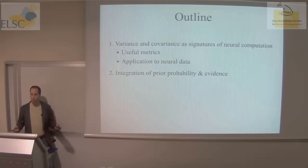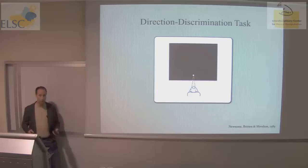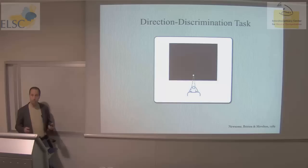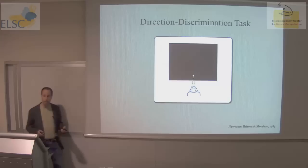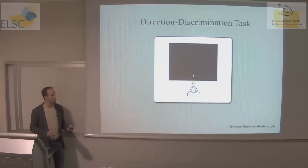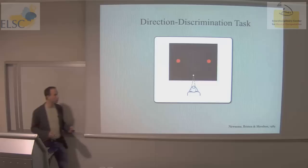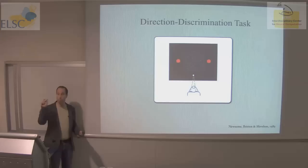Most of you were at the lecture on Tuesday, so very quickly I'll remind you of the basics. We study decision-making in rhesus monkeys trained to make decisions about things they see on a video display. These experiments are based on judgments of motion where a monkey looks at a fixation point, sees choice targets, and decides whether the net direction of motion is to the right or left. We vary the difficulty by controlling the probability that a dot plotted at time t will be displaced in motion 40 milliseconds later, as opposed to randomly replaced as noise. I'll call that the strength of motion or percent coherence.